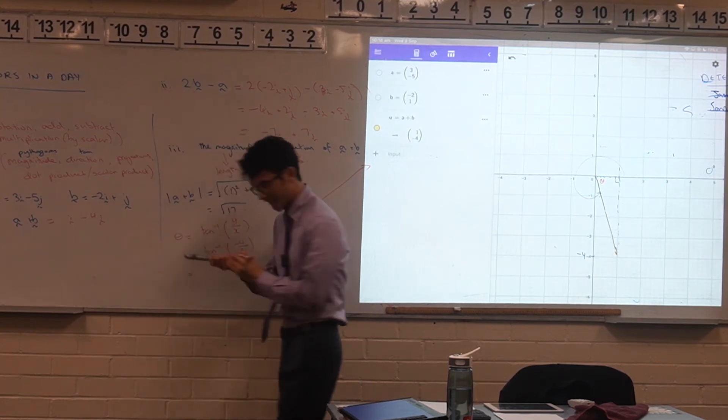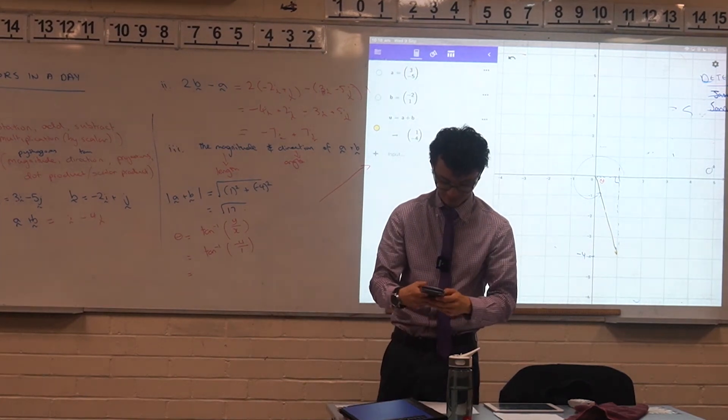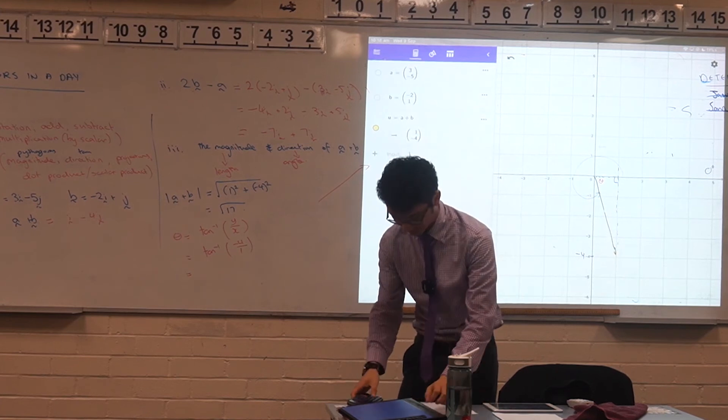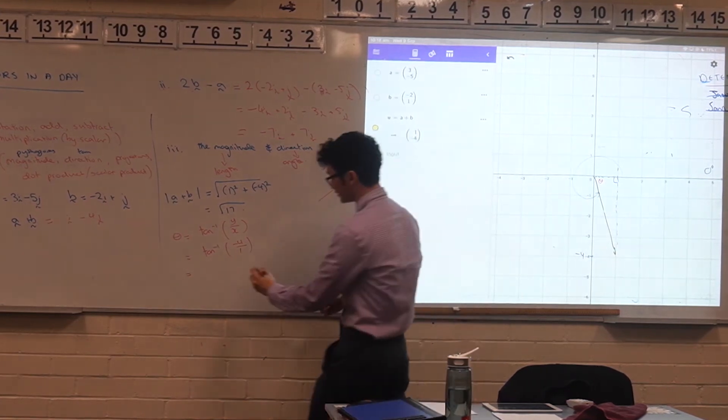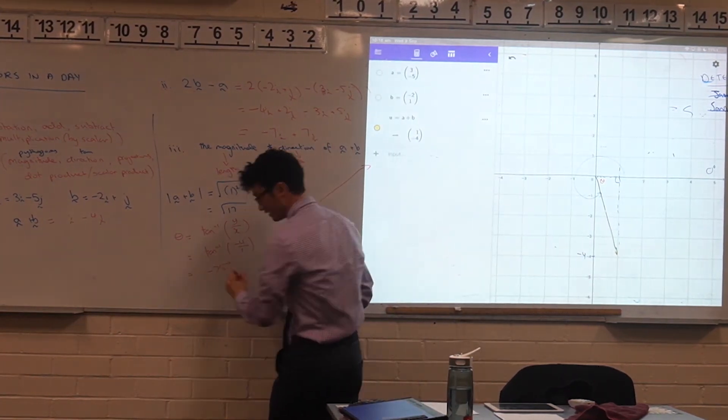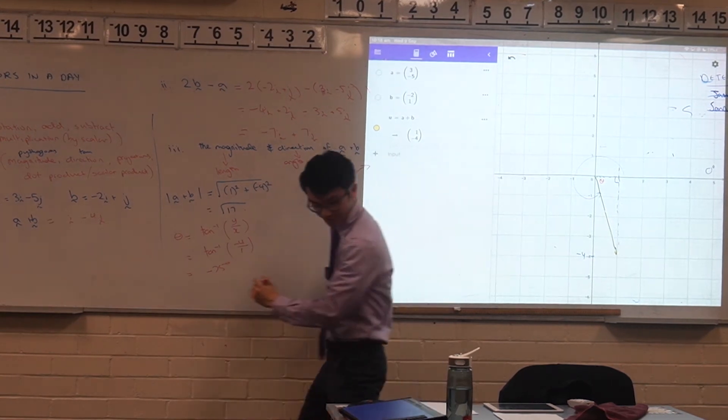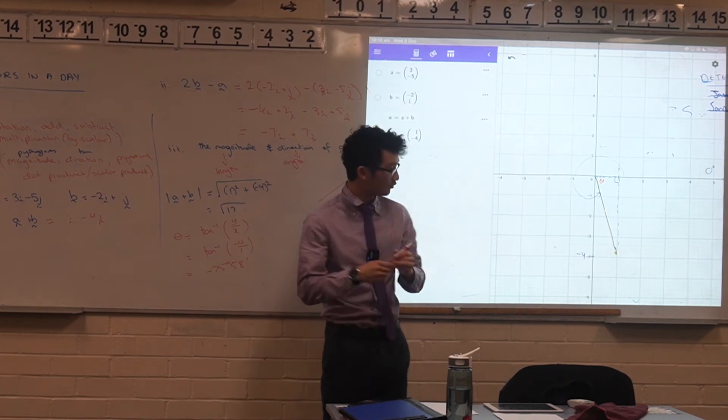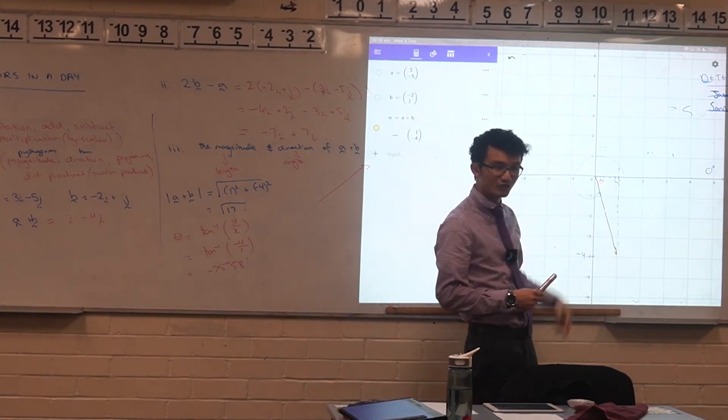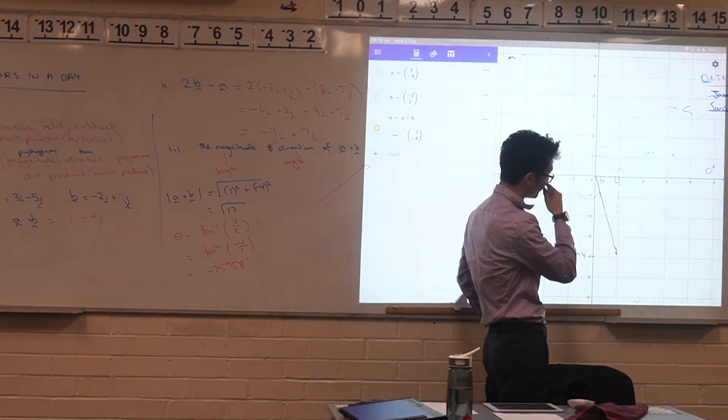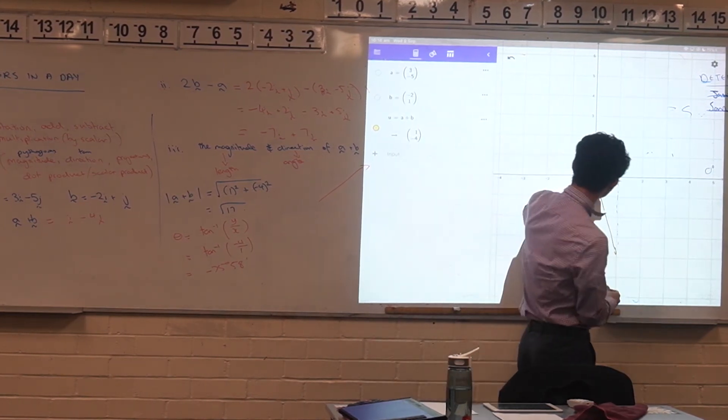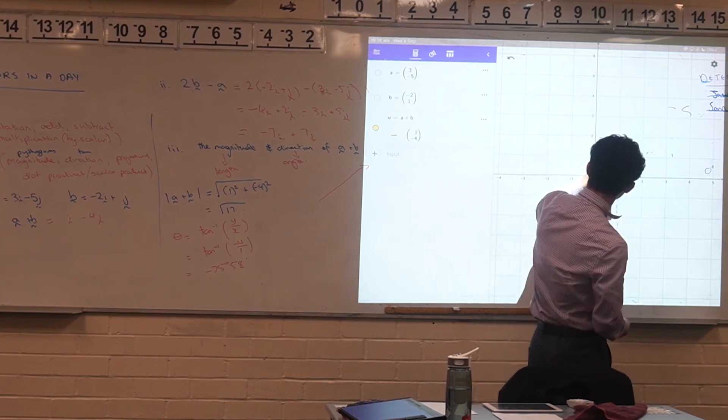Now when you put that in your calculator, let's double check this one, you're going to get negative 75 degrees, and let's round here, 58 minutes. What does that actually mean though? Because this angle here is clearly positive, and it's because you've used the negative 4 value up here. If you were just to take the positive value, you'd find out this angle here is 75 degrees and 58 minutes.